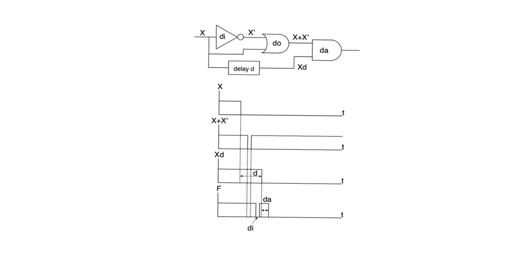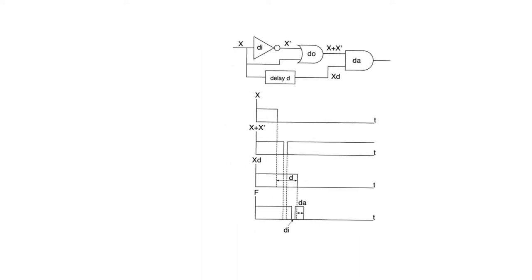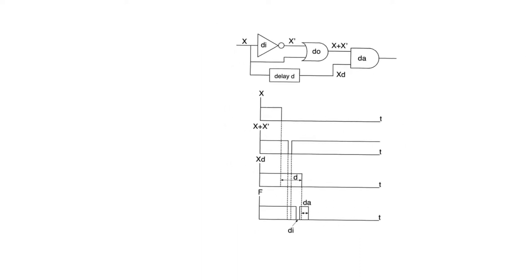Static hazards occur when a glitch appears in a signal, usually an output signal, whose value is supposed to be constant. Dynamic hazards, on the other hand, happen when the output of a specific combinational logic circuit is supposed to make a transition, and it does make the transition, however we observe a glitch while making the transition.